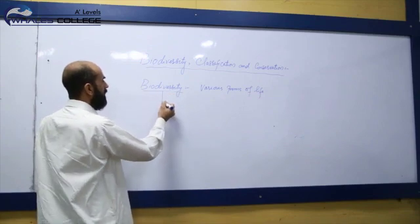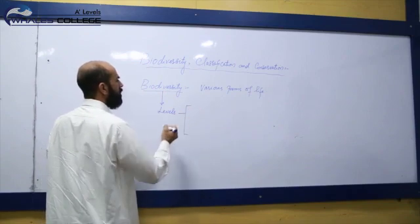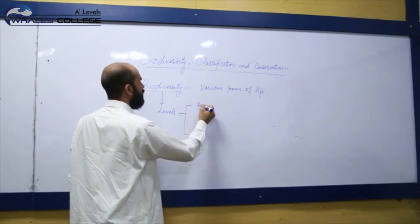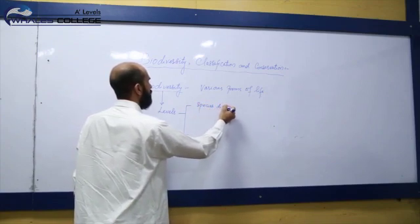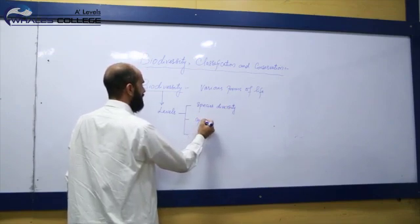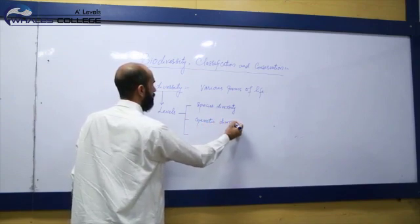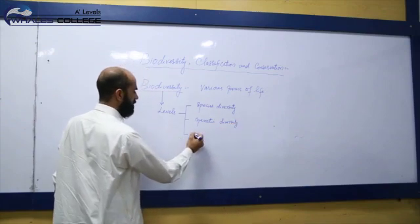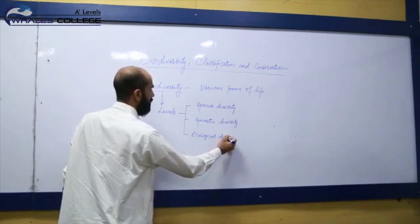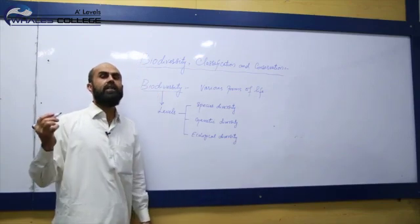We normally recognize three levels of biodiversity: the first is species diversity, the second is genetic diversity, and the third is ecological diversity.